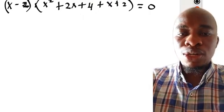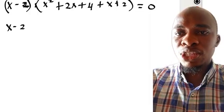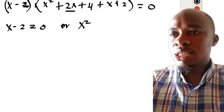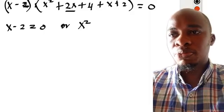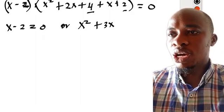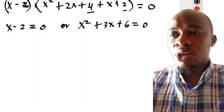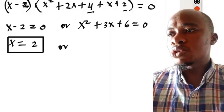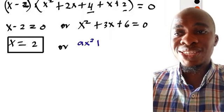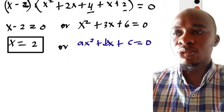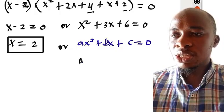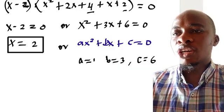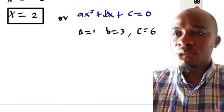From there we have x equals 2 as the first solution. For the bracket, when you add x squared plus 2x plus 4 and x plus 2 together, we're going to get x squared plus 3x plus 6 equals 0. We can relate this to the quadratic equation ax squared plus bx plus c equals 0, where a equals 1, b equals 3, and c equals 6.